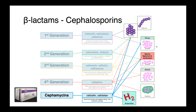Finally, we have our cephamycins, sometimes grouped with second-generation cephalosporins but distinct from them in spectrum of activity and the mechanisms by which bacteria develop resistance. Cefoxitin and cefotetan have good activity against both gram-positives and negatives, but excellent activity against anaerobes, so you may see them used in treating abdominal infections in cases where we have ruptured bowels.